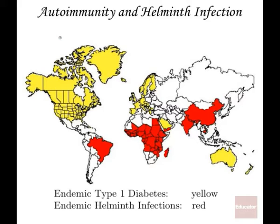Here is an interesting map of the world. The yellow areas indicate countries where type 1 diabetes is endemic — meaning it consistently occurs in a detectable proportion of the population. The red areas indicate places where helminth infections are endemic. The hypothesis, which has been around for quite a while, is that as countries became more sanitary, infectious diseases like helminths were greatly diminished, and because of that other diseases — especially autoimmune diseases — emerged.